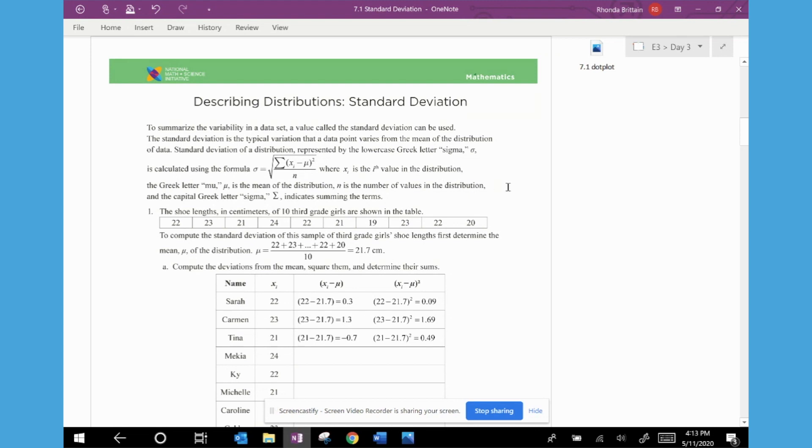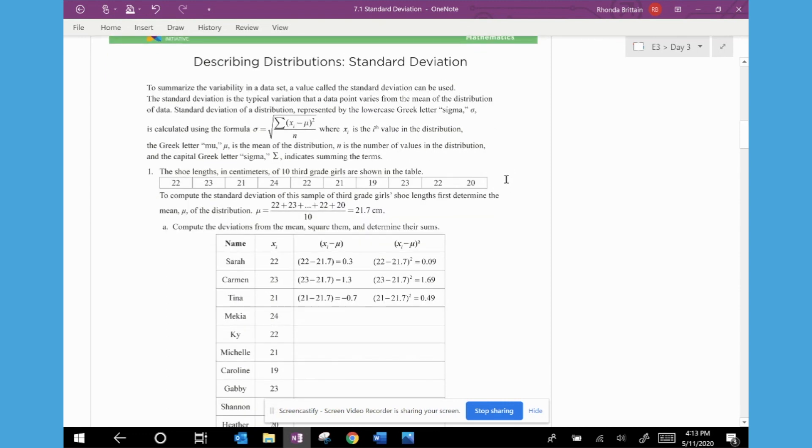So when we look at question one, it says that we're going to be looking at the shoe lengths in centimeters of 10 third grade girls, and they're shown in the table. So it says to compute the standard deviation, we first have to determine the mean. So this notation right here mu would be the mean. So to find the mean of all of these shoe lengths, we're going to add the shoe lengths and divide by 10, and we're going to get 21.7 centimeters.